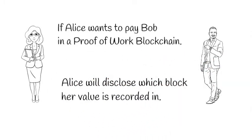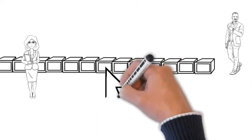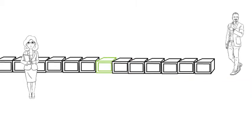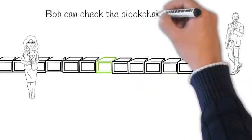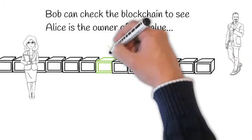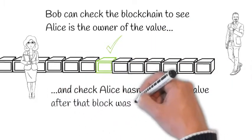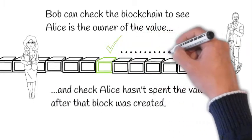Alice will disclose which block a value is recorded in. Once the block is identified, Bob can check the blockchain to see Alice is the owner of the value and check that Alice hasn't spent the value after that block was created.